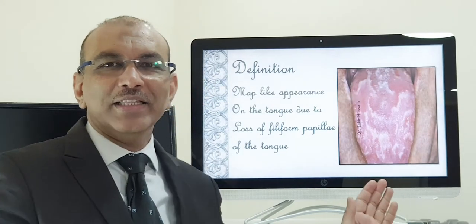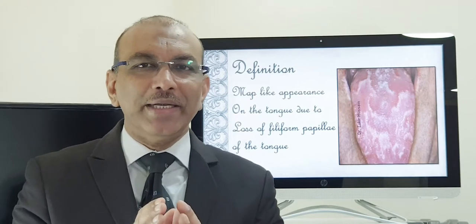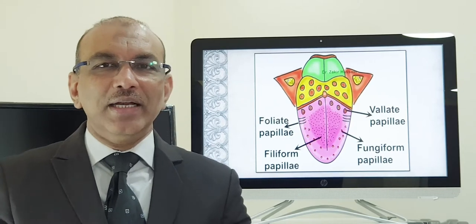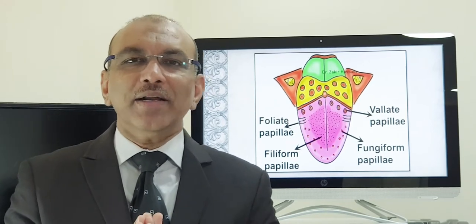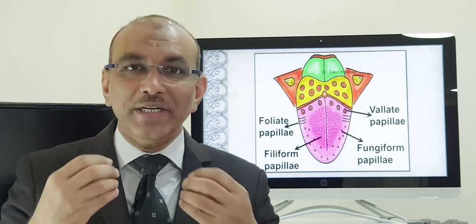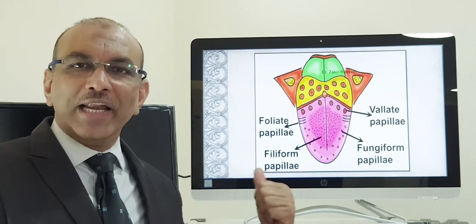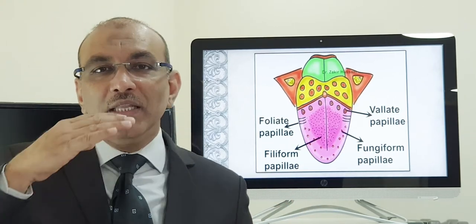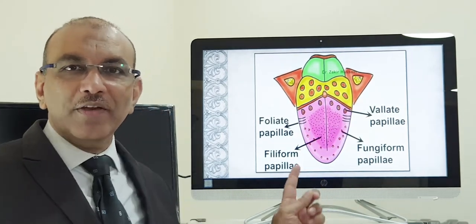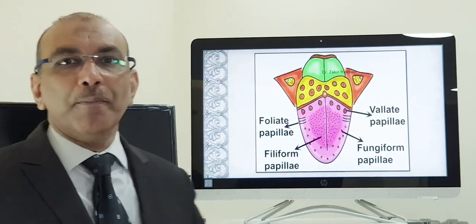This picture shows you the pattern of geographic tongue. To make you understand better, let me tell you the structure of the tongue. The important functions of the tongue are it helps in digestion, in speech and for taste sensation. For taste sensation you have different types of papillae. On the upper surface of the tongue, the majority of the surface has filiform papillae — this part is the filiform papillae.